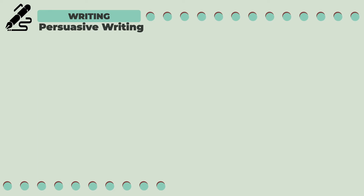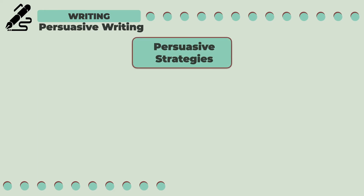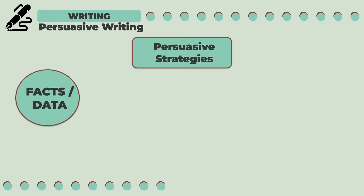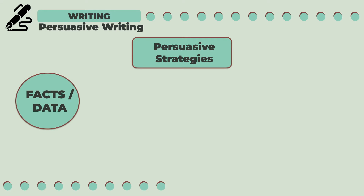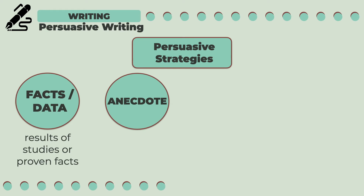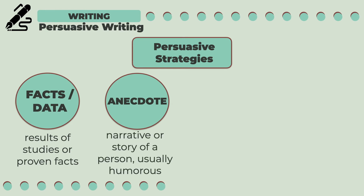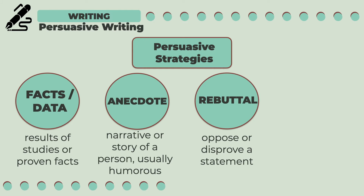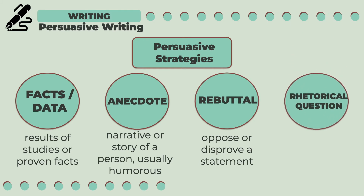Aside from the given appeals, you may also use the persuasive strategies, such as the following: fact or data, which are the results of studies or proven facts that may persuade the readers; an anecdote, or a narrative or story of a person or character; a rebuttal, which is used to oppose or disprove a statement, particularly a counterclaim; and lastly, rhetorical questions, which are not meant to be answered by the readers but are used to challenge the readers to reflect on the issue.